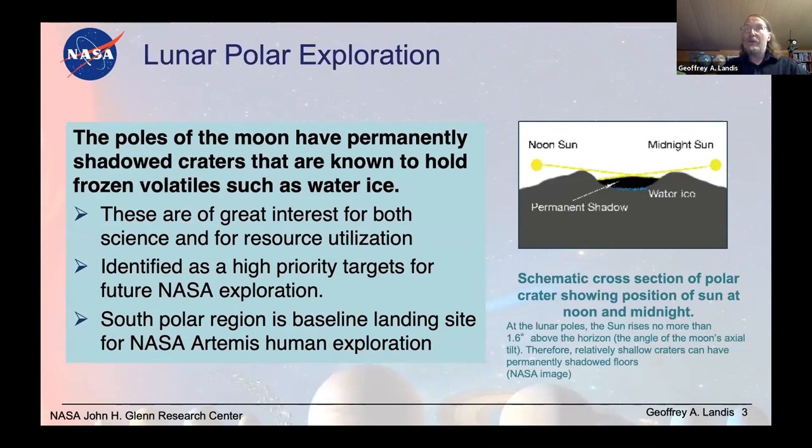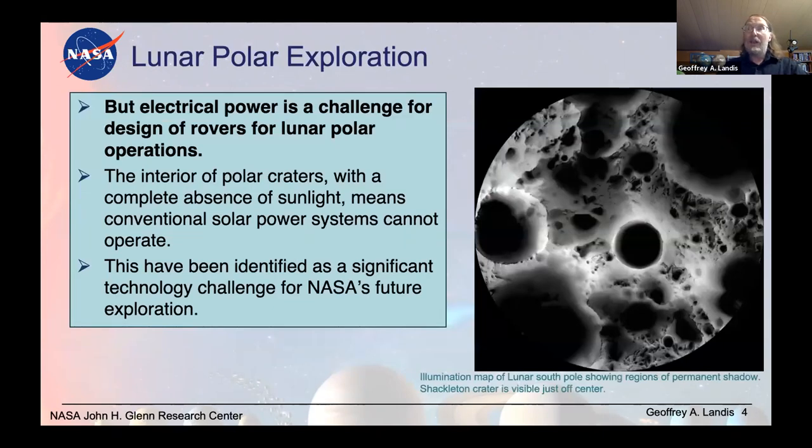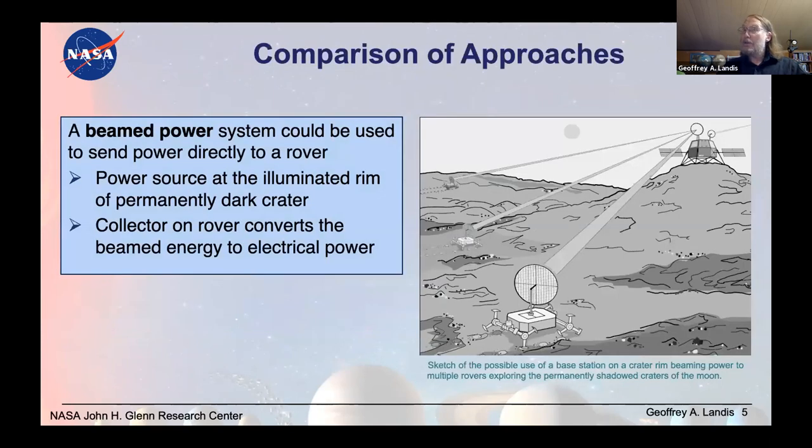Well, this is something that we all know. I think the shadowed regions of the moon seem to have frozen volatiles such as water ice. They're of extreme interest. They are, of course, frozen because they never get sunlight. The fact that they never get sunlight makes it a little bit difficult for operation of our standard solar powered systems. So this is a problem. One possible solution to it is to use a beamed power system to send power directly to a rover. So we've already talked about this a couple of times. The power source is on the illuminated rim of a dark crater. We use some sort of beam and I'll give a couple of choices in a second. And a collector on the rover converts that beamed energy into electrical power.